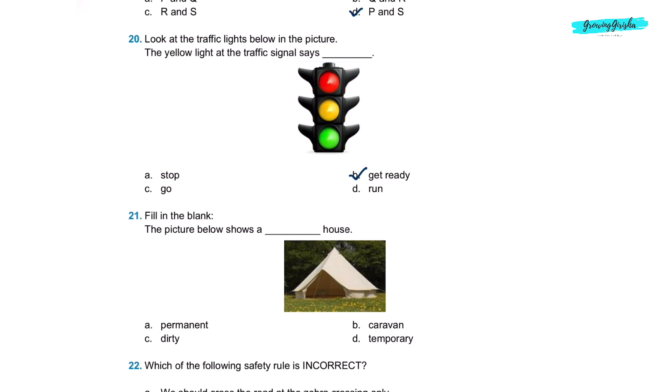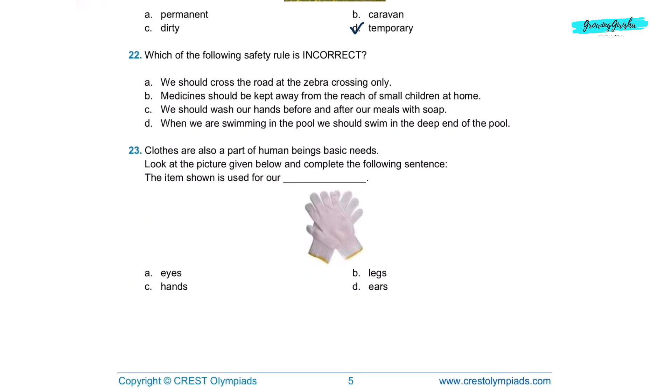Question 21. Fill in the blank. The picture below shows a temporary house. Option D, temporary. Question 22. Which of the following safety rule is incorrect? A, we should cross the road at the zebra crossing only. This is correct. B, medicines should be kept away from the reach of small children at home. This is also correct. D, when we are swimming in the pool, we should swim in the deep end of the pool. This is incorrect. So option D is the correct answer.